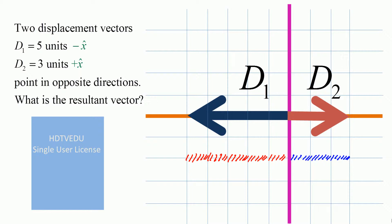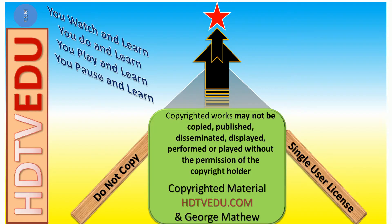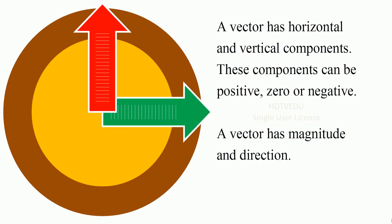The question is: what is the resultant vector? Do not forget — a vector has horizontal and vertical components. These components can be positive, zero, or negative. A vector has magnitude and direction.